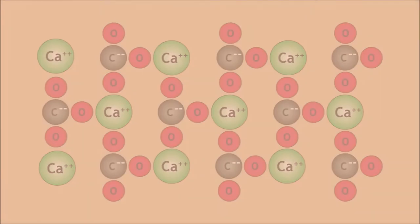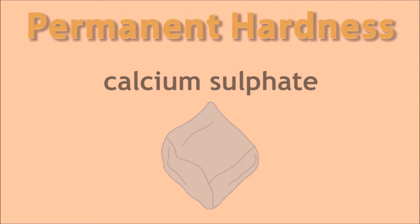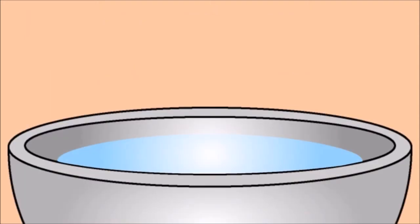Another form of hardness is called permanent hardness, which comes from rocks containing gypsum, which is calcium sulphate. In this case, you do not get lime scale, but you still, of course, get a scum with soap.